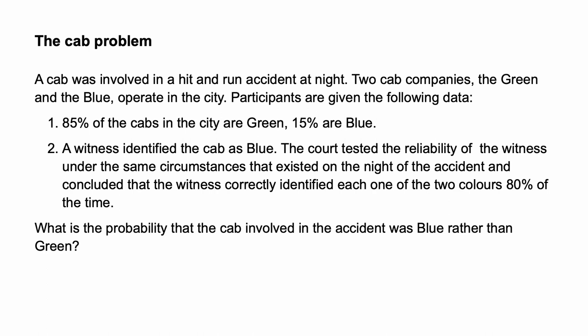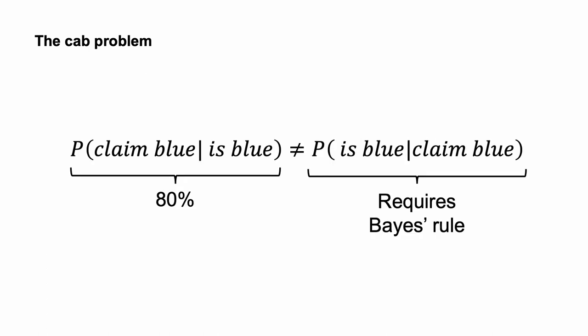In the experiment, the median and modal answer was 80%. The correct answer is 41%. The experimental result indicates confusion between conditional probabilities. The experimental participants were confusing the probability of the witness identifying a blue cab given that the cab was blue, with the probability of the cab being blue given that the witness identified it as blue. However, we need to use Bayes' rule to calculate the probability of the cab being blue given that the witness identified it as blue. The experimental subjects effectively neglected the rarity of blue cabs.